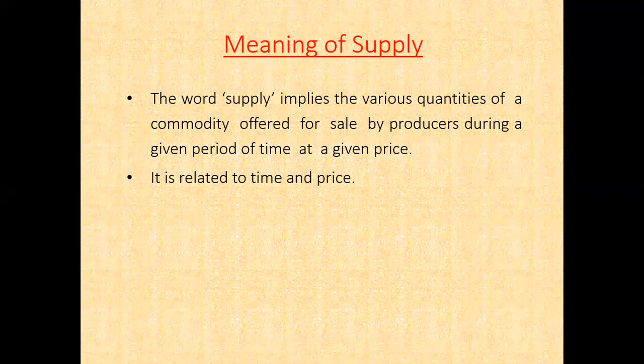Supply is a flow concept. It refers to the amount of a commodity that firms produce and offer for sale in the market over a period of time — say a day, a week, a month, or a year. It is assumed that general market circumstances remain unchanged throughout this period: no change in fashion or taste, no new substitutes, and no new inventions disturbing supply. Supply, therefore, should not be confused with the stock of goods possessed by the seller. Supply refers to only that part of the stock which is actually offered for sale at the prevailing price.